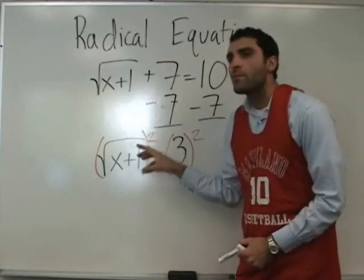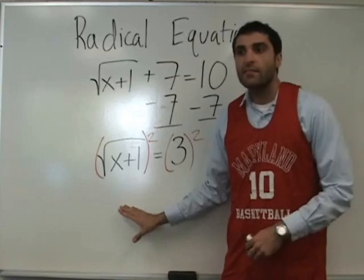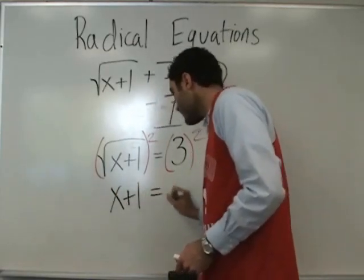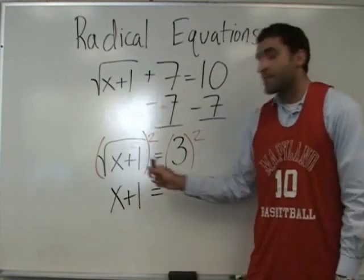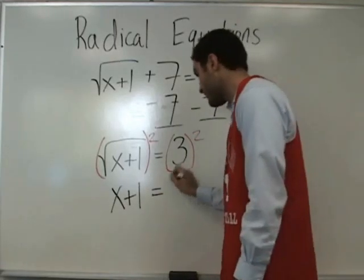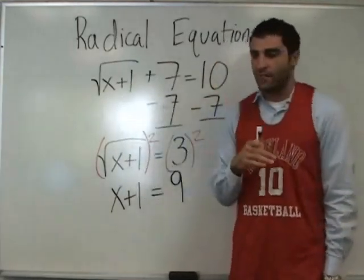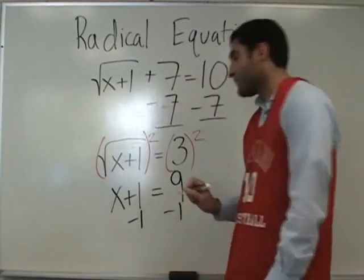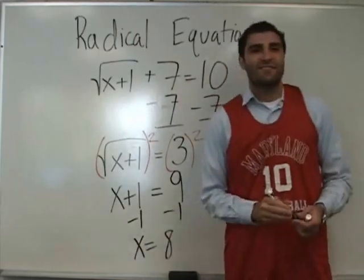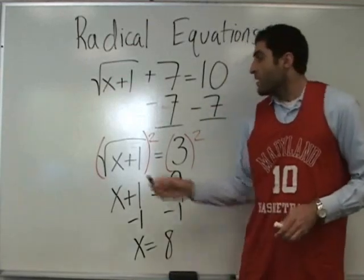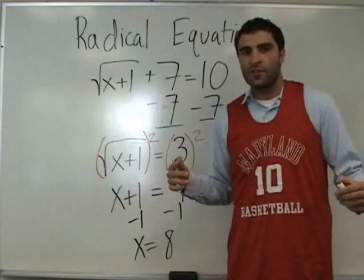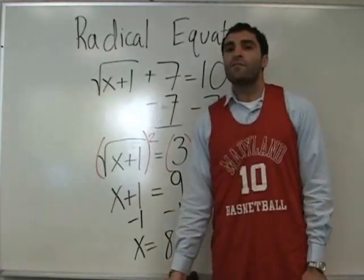When we square this square root, what's left over? Just what's inside. The square root of X plus 1 squared is X plus 1. Correct. And then does 3 squared become 9? It does. Minus 1, minus 1, and we're done. To get rid of the square root sign, you square both sides. In algebra, whatever you do to one side, you do to the other, so you square both sides. X equals 8.